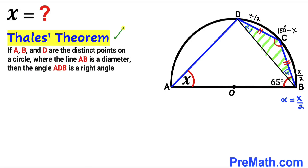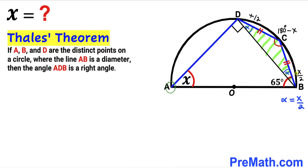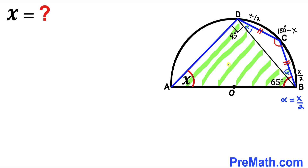Now let's recall Thales' theorem. If A, B, and D are three distinct points on a circle where AB is the diameter, then angle ADB is a right angle — that is, 90 degrees. In triangle ABD, points A, B, and D lie on the same semicircle and AB is the diameter, so angle ADB is 90 degrees. I will label the remaining angle at A as beta.